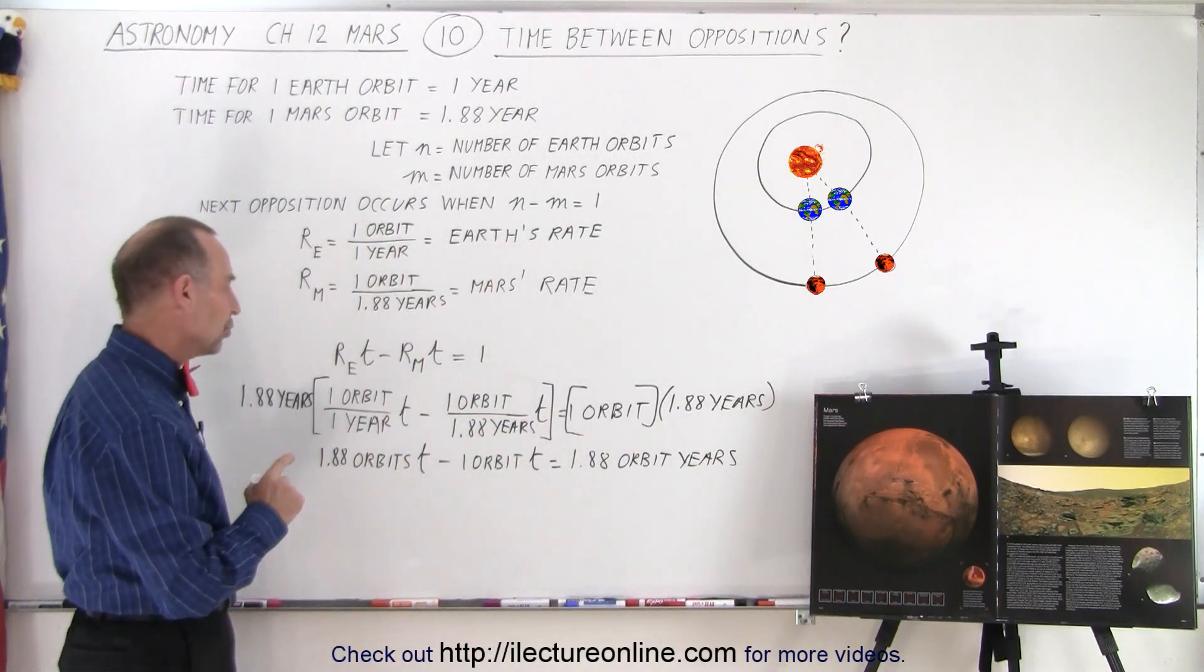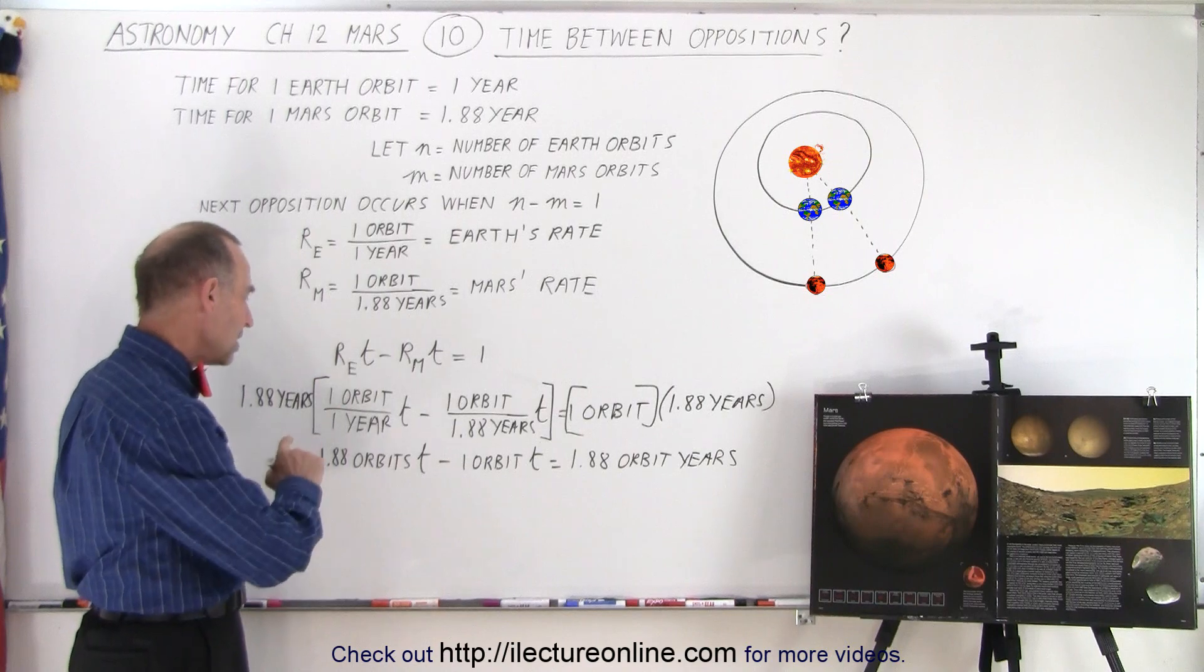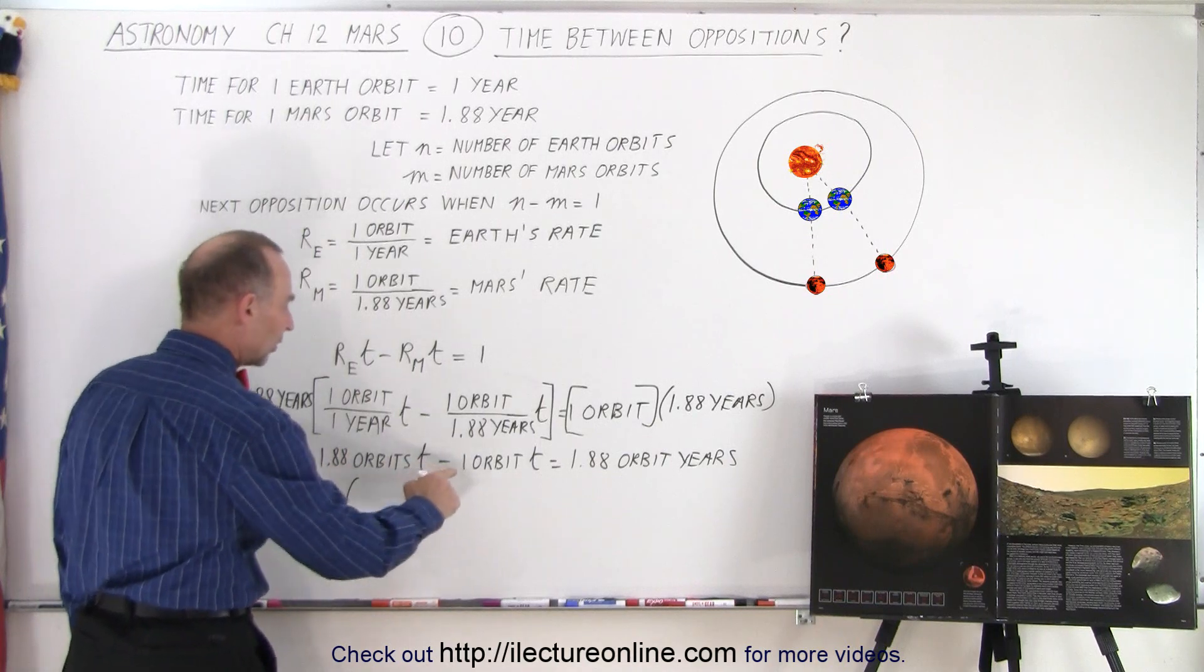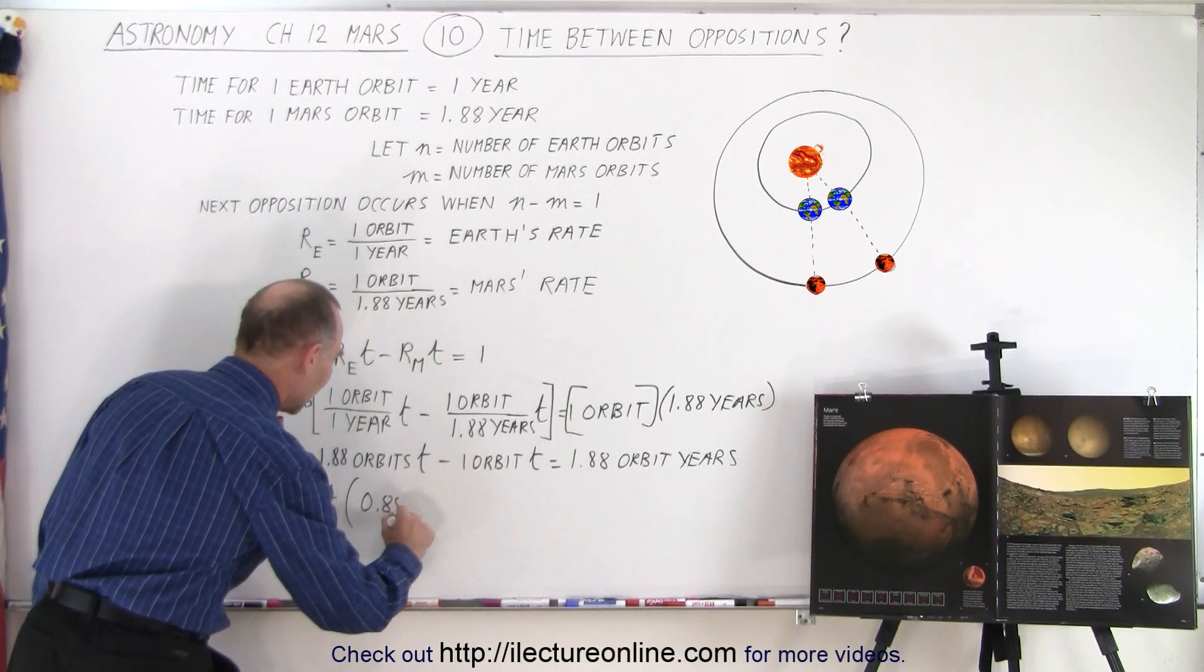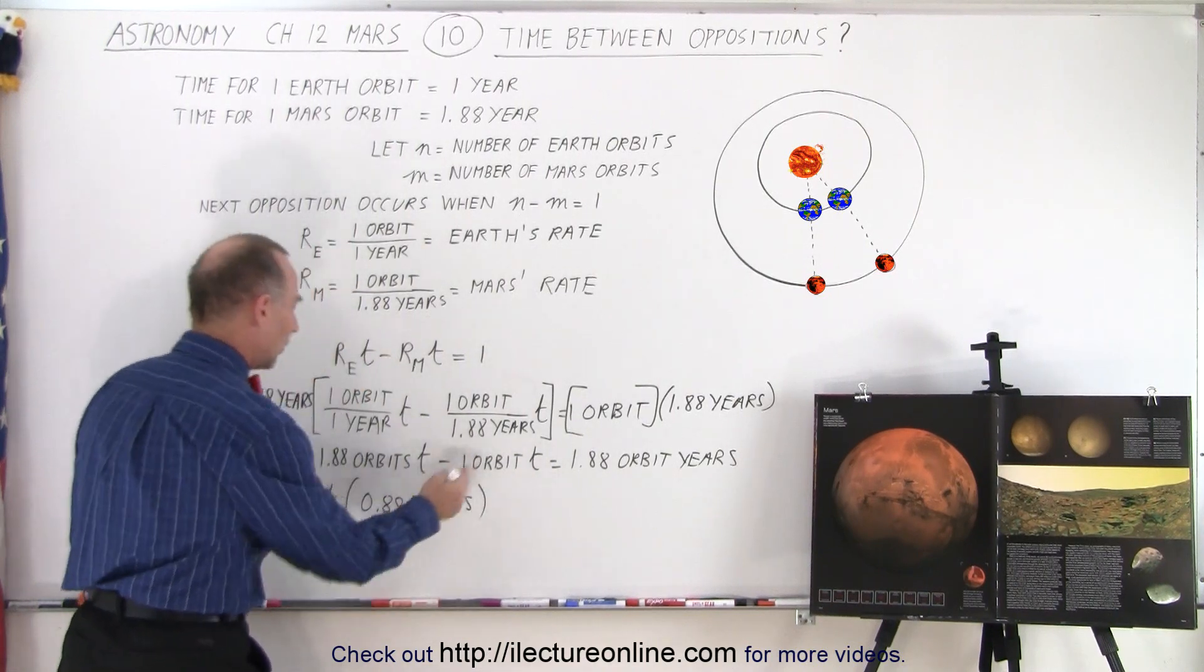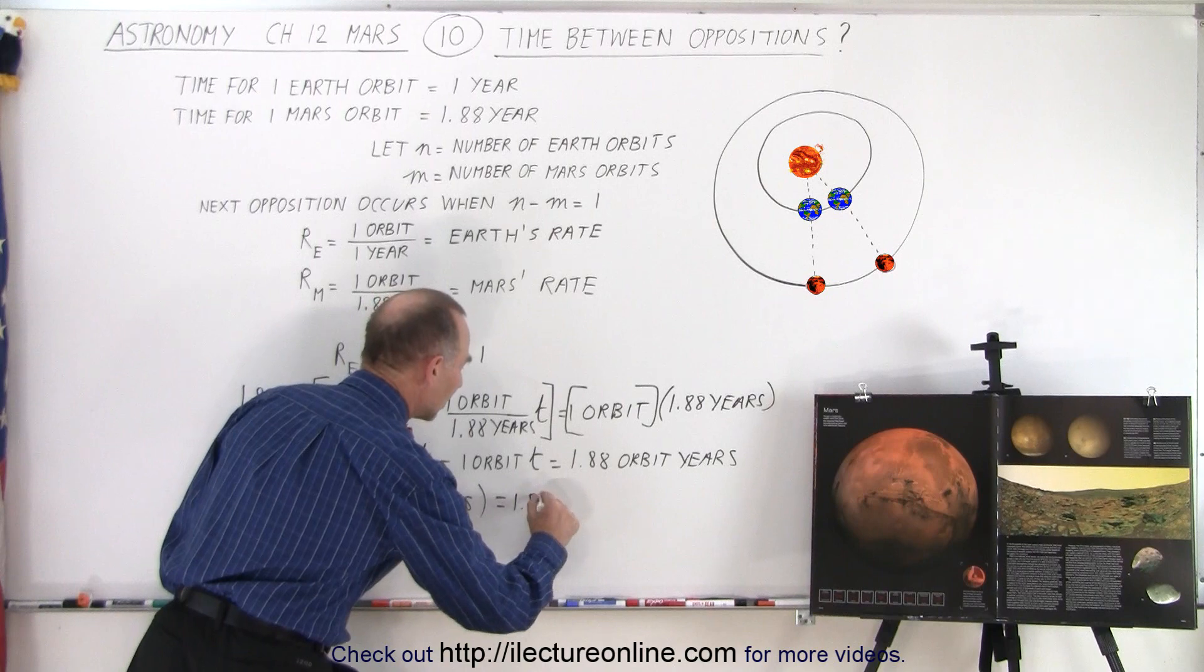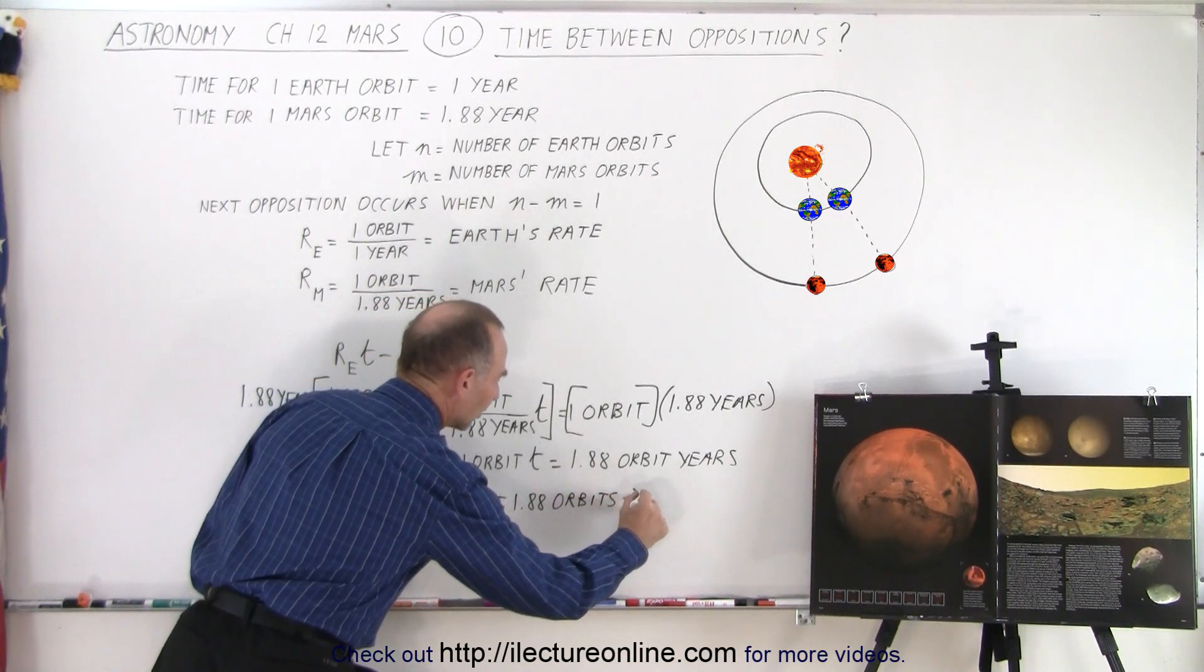So next what we're going to do is we're going to factor out t and subtract the 2. So now we end up with t times 1.88 orbits minus 1 orbit, that would be 0.88 orbits. So when we factor out the t, we get 1.88 orbits minus 1 orbit, which is 0.88 orbits, equals 1.88 orbits times years.